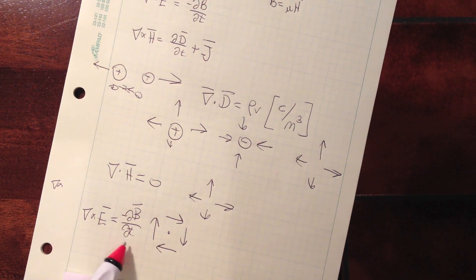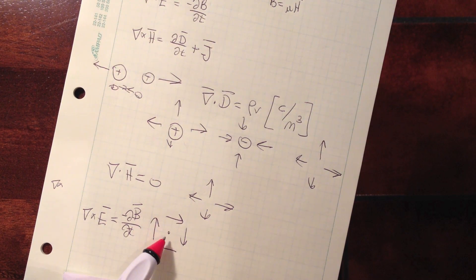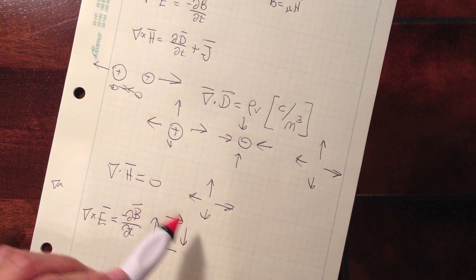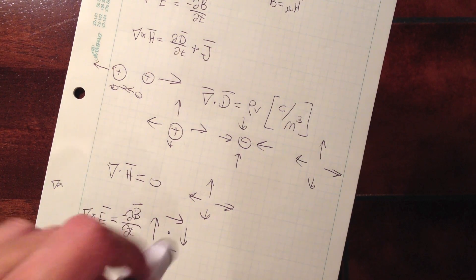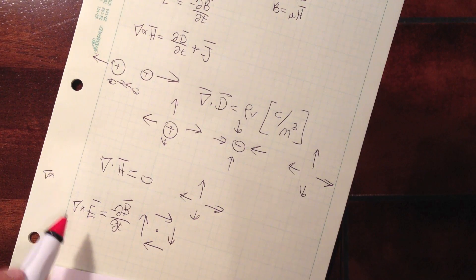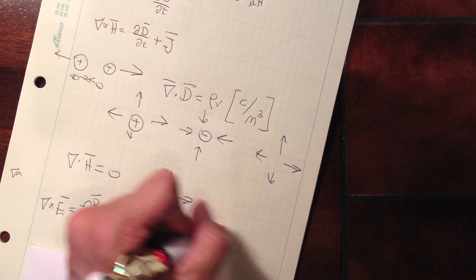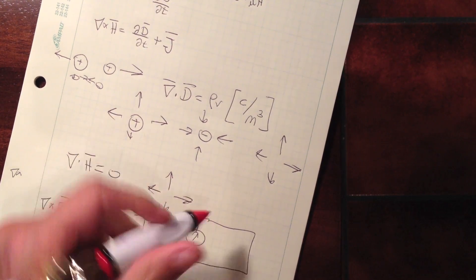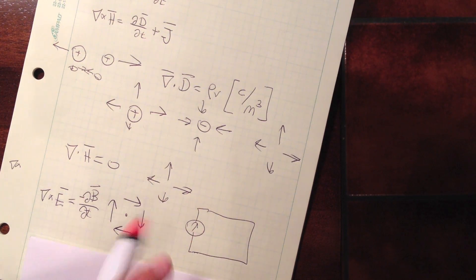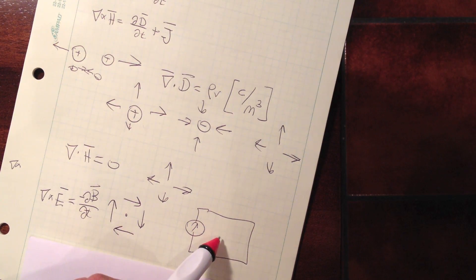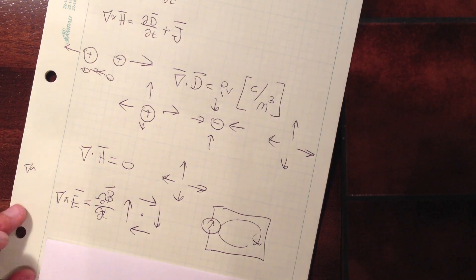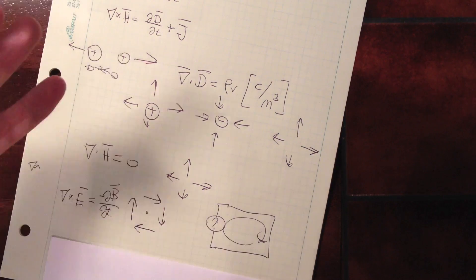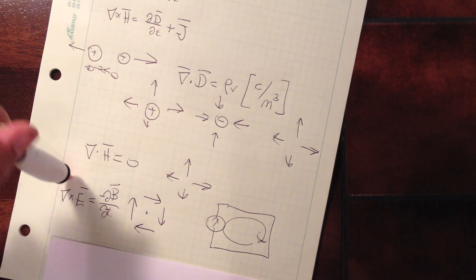The curl of E is equal to the rate of change of the magnetic field. This means two things: if we have a time-changing magnetic field within a loop, it's going to give rise to an electric field that swirls. And similarly, if we have an electric field that swirls, we're going to have a magnetic field through that loop that's changing in time. This originally came from Faraday's experiment, where they changed the magnetic field through an electric circuit and measured the current coming out. They found that when the magnetic field was changing within a loop there would be a flow of current depending on whether the field was increasing or decreasing. This is an experimentally found law.